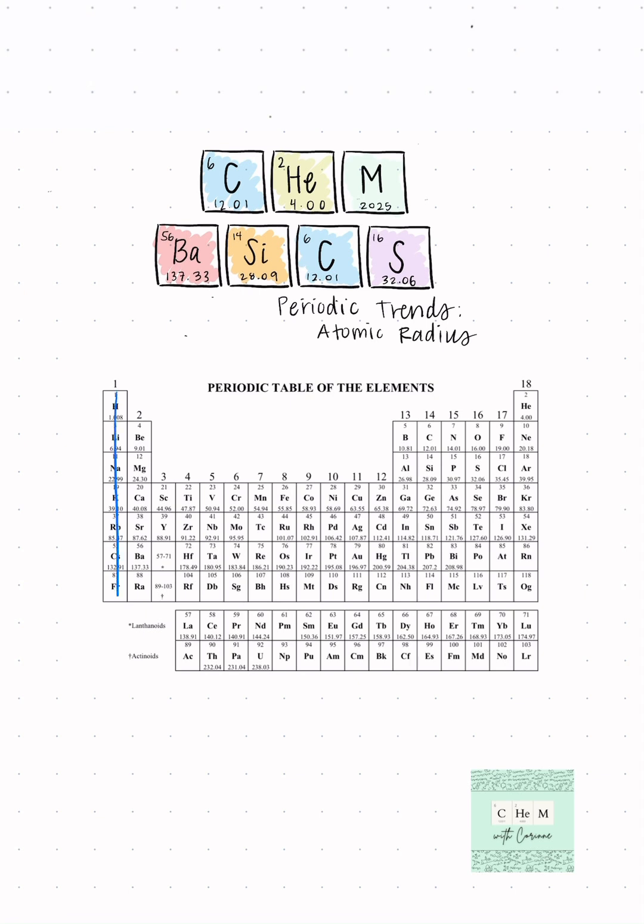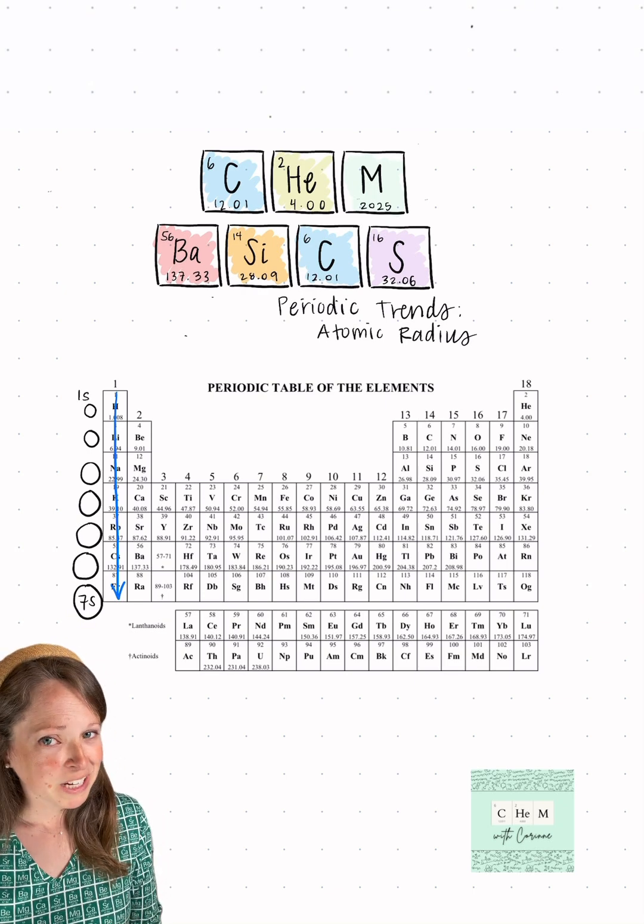As you move down a group on the periodic table, energy levels are added to the electron cloud, effectively increasing the size of the atomic radius. I would argue that that part of the trend is pretty easy to understand.